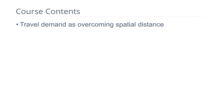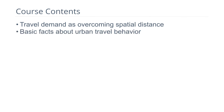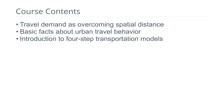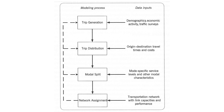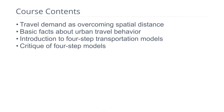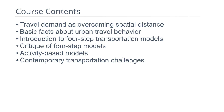In this course, we will examine the basis for travel demand, which is overcoming spatial distances between activity places. We'll quickly look at some basic facts about urban travel. I will introduce the four-step transportation models commonly in use at regional levels across the country, critique their weaknesses, introduce activity-based models as a different approach, and conclude with a review of contemporary transportation challenges.